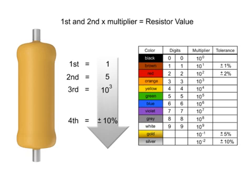Now, let's determine what the bands would be on a 15 kilo-ohm resistor. Since the first digit is 1, the first band would need to be brown. The second digit is 5, so the band color would need to be green.